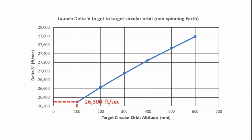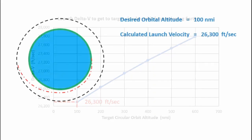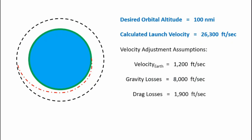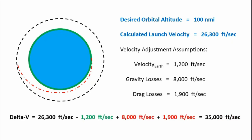Here's our delta-V curve. We want to go to a 100 nautical mile circular orbit, and from the plot we see that we require 26,300 feet per second — that's our total delta-V to get to the circular orbit. For the delta-V losses and Earth rotation contribution, I'm assuming the velocity of the Earth is 1,200 feet per second at the surface, meaning I'm launching from somewhere like the east coast of the United States. I'm assuming the gravity loss is 8,000 feet per second and the drag loss is 1,900 feet per second. So: 26,300 minus 1,200 for Earth rotation, plus 8,000 plus 1,900 for losses, gives a total delta-V required of 35,000 feet per second.